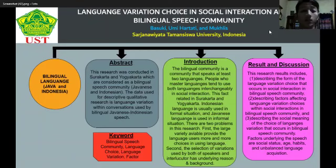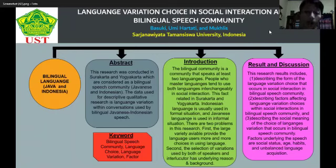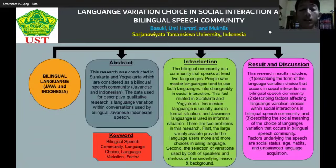Let's see my poster presentation. My poster title is 'Language Variation Choice in Social Interaction Among Bilingual Speech Community.' This journal is made by Pasuki, Umi Hartati, and Muklis, also from Sarjana Biata Tamansiswa University. The keywords of my poster presentation are: bilingual speech community, language choice, language variation, and factor.